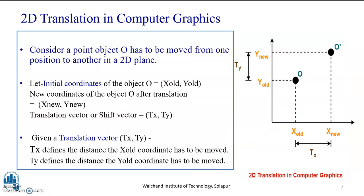To understand further, consider a point, object O, that has to be moved from one position to another in a 2D plane, as shown in the diagram. This is the object O that has to be moved in this two-dimensional plane. In translation, let the initial coordinate of the object O be x-old and y-old. New coordinates of the object O after translation will be x-new and y-new. The translation vector, or shift vector, that causes the point to be moved from x-old to x-new is denoted by tx and ty. Given a translation vector tx, this tx defines the distance the x-old coordinate has to be moved, whereas ty defines the distance y-old coordinate has to be moved.